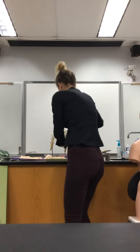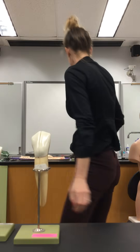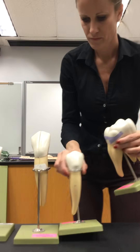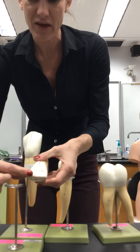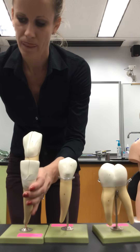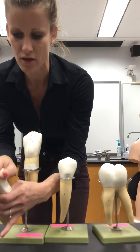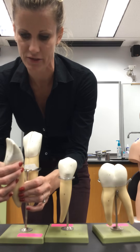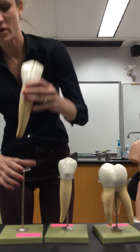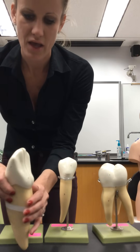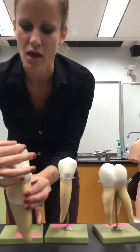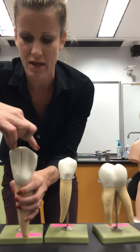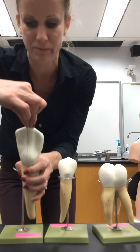Looking at individual tooth models: an incisor is a relatively small tooth with a single root and a flat top — it comes to one single peak and is flat on top. A canine or cuspid also comes to one peak, but notice it is not flat — it has a distinct point, a cusp. That's why we call it cuspid.